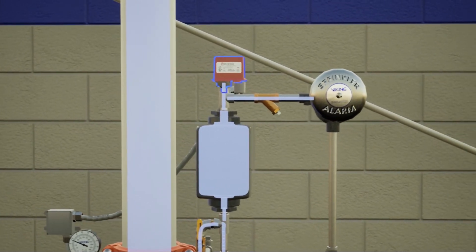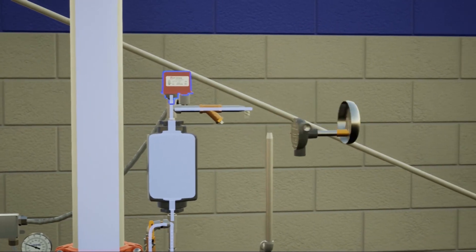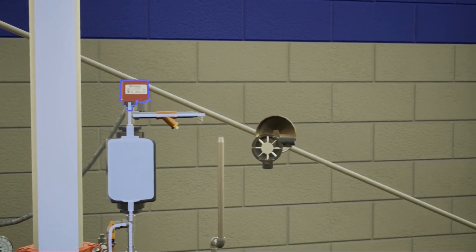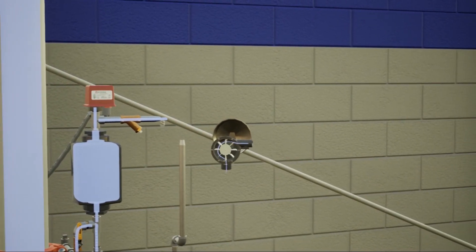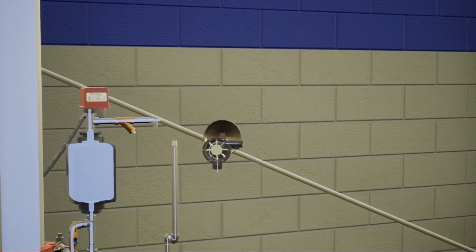The water will then activate the water flow alarm, alerting the fire department and informing building occupants to evacuate. The water motor gong is installed as fail-safe to any electrical alarms.